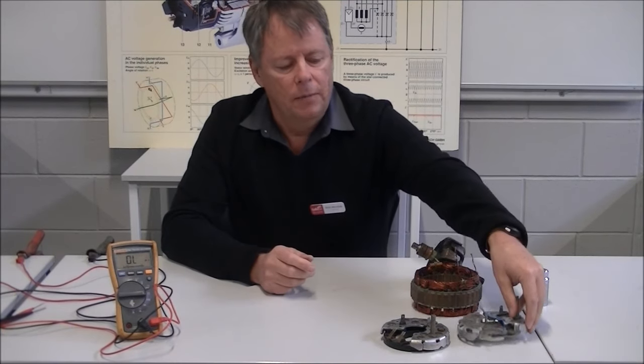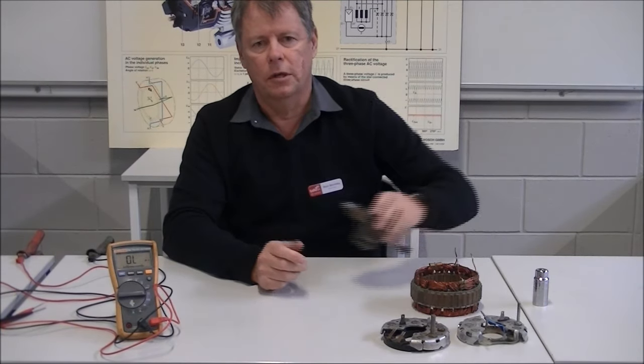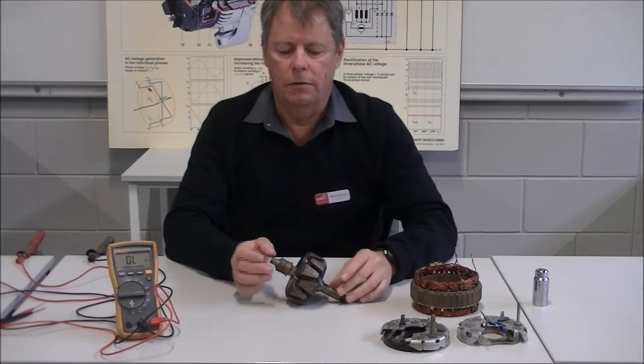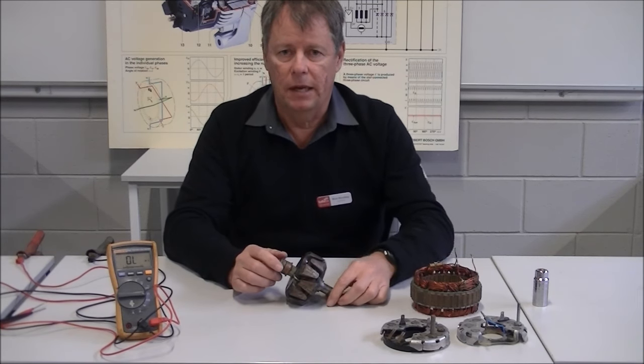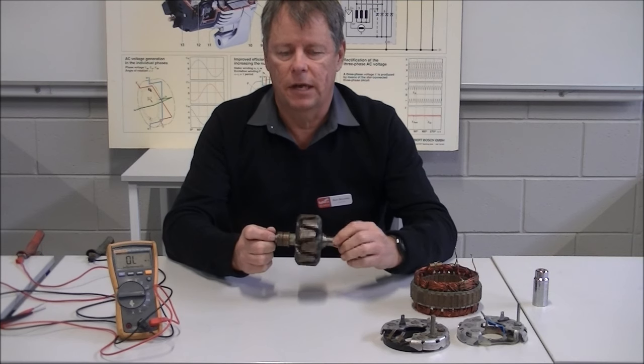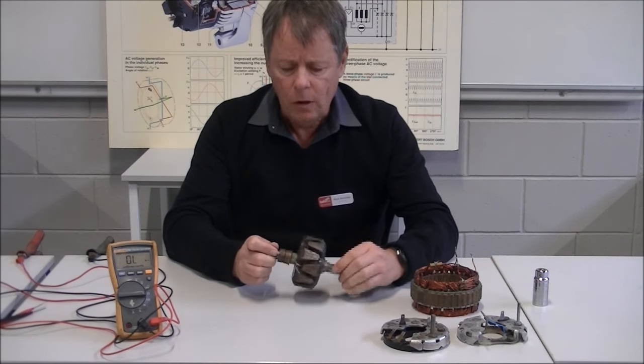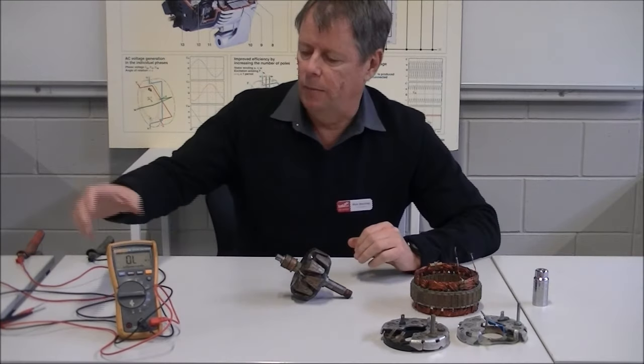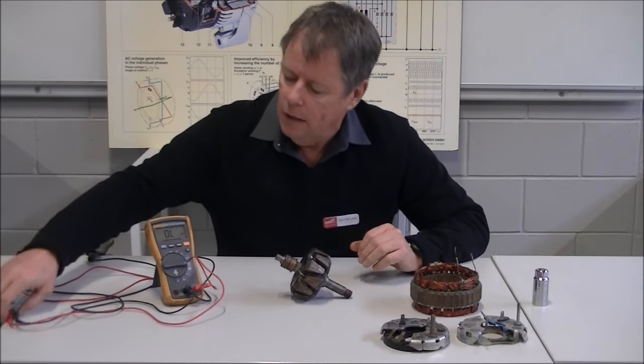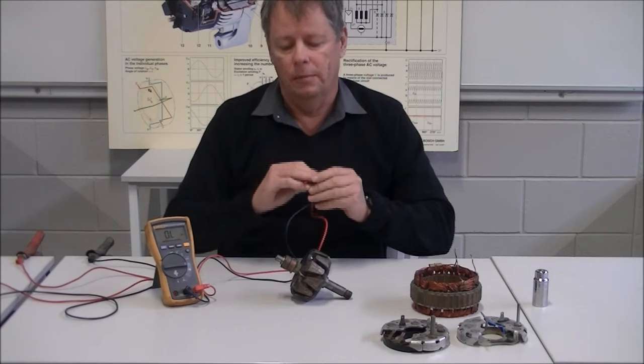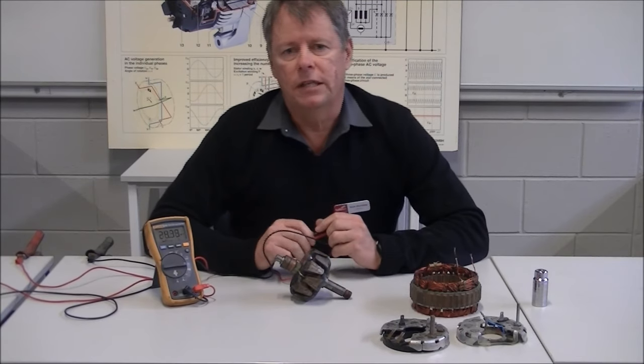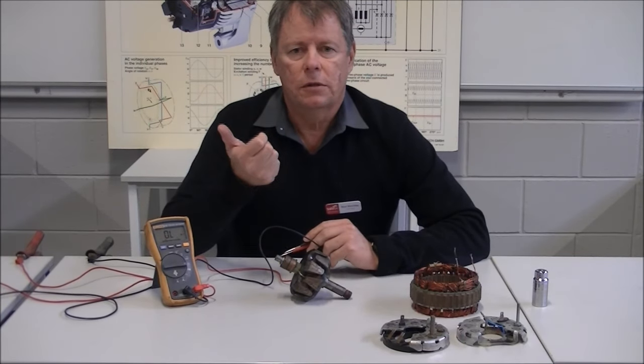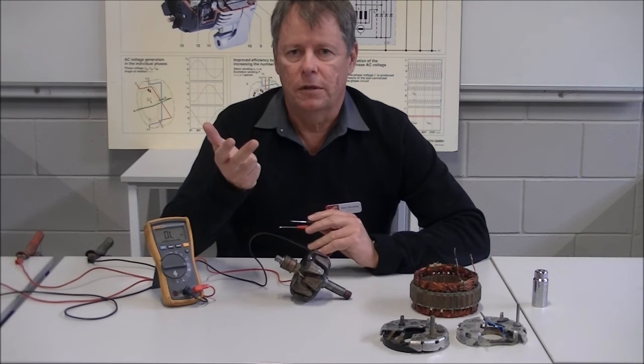We'll start by having a look at the rotor. Now the job of the rotor in the alternator is to produce the magnetic field, and that rotates within the stator. So we'll have a quick look at how we're going to test the operation of that rotor, or whether it's good for service or not. We want to do three tests: check for shorts, for grounds, and for open circuits.